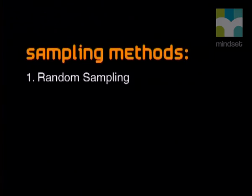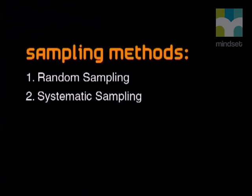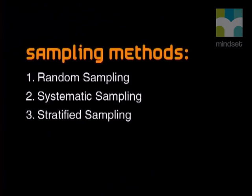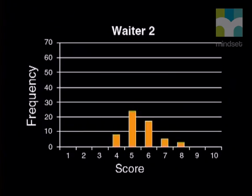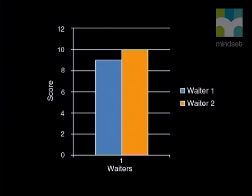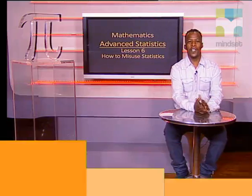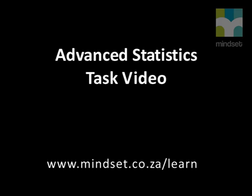Let's recap what we learned today. We learned about the four different methods of sampling: random sampling, systematic sampling, stratified sampling, and cluster sampling. These methods are used to avoid biased data. Remember that graphs can be manipulated to paint a specific picture instead of the real one, so always look at scale and axis. Thank you for joining us, grade 12s. Remember to look at the tasks for this section in the advanced statistics task video. You'll also find more resources on our website, www.mindset.co.za/learn. See you soon.